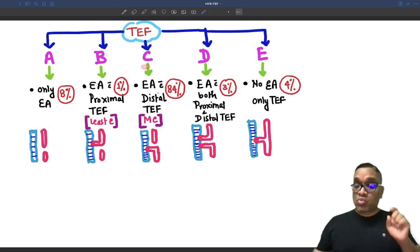C type which is the most common type is esophageal atresia with distal tracheoesophageal fistula. You can see there is an atresia and distal fistula is formed here.